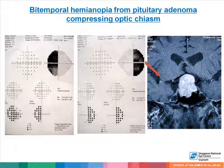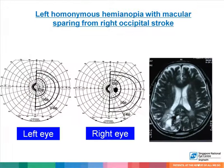This slide shows an example of a classic bitemporal hemianopia resulting from a suprasellar lesion compressing the chiasm. Here we see a homonymous left hemianopia from a lesion in the occipital cortex on the right.